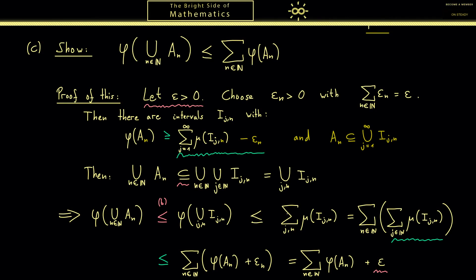In addition, in the case that you don't want to calculate just lengths but rather areas or in general n-dimensional volumes, you can use a similar definition for phi and also a similar proof in this way. And here you can see we are on the way for the construction of the n-dimensional Lebesgue measure. Okay, that's good enough for today. We will continue our journey in the next video. Thank you for listening and see you next time.